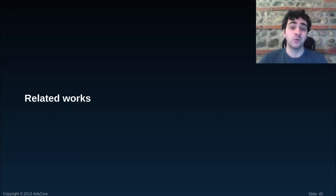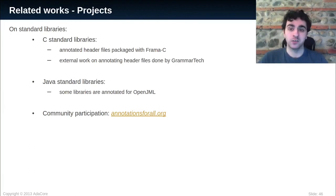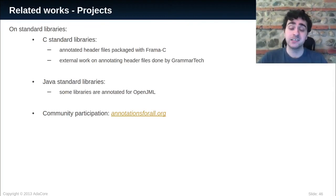Finally, I want to talk about similar works that have been done for other libraries. For example, C also has a verification tool called Frama-C, and it's packaged with annotated header files for the C standard libraries. It provides contracts — sometimes incomplete, but also complete ones for certain libraries. GrammarTech has been doing some work to annotate more libraries from the C standard libraries. For Java, some of the standard libraries are annotated for OpenJML, which is one verification tool for Java code. Besides this, the community can be involved in this effort as well. There's an initiative called AnnotationsForAll — the goal is to enable anyone in the community to participate. You can check it out at annotationsforall.org.